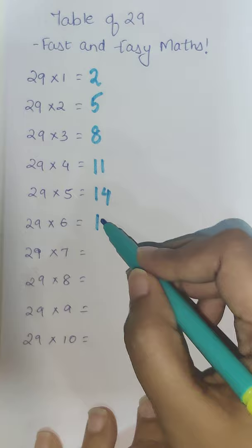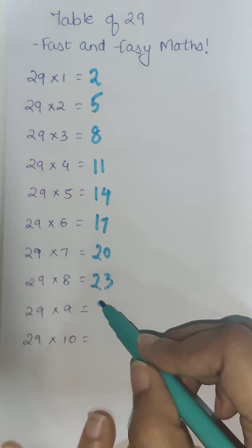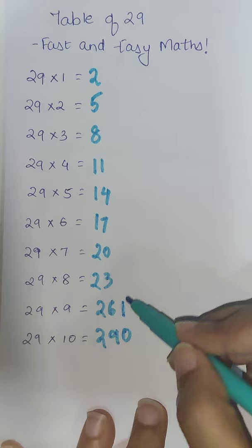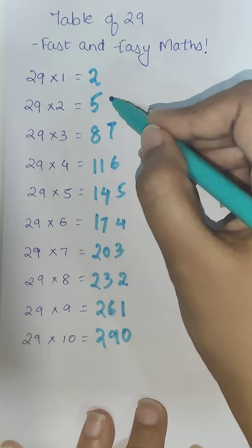Plus 3 will get you 20, plus 3 will get you 23, plus 3 will get you 26, plus 3 will get you 29. While reversing, you start from 0, 1, 2, 3, 4, 5, 6, 7, 8, and 9, and that is how you write your 29th table.